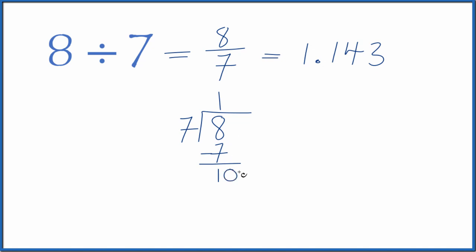Doesn't go into 1, but we can call this 10 as long as we put a decimal point up here. So 1 times 7, that's 7. Subtract and we get 3.